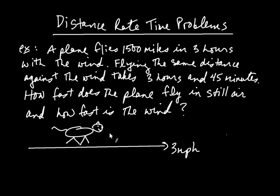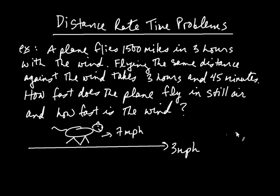The cat is walking this direction at seven miles per hour. Now, you as an observer watching this cat walk on the moving sidewalk, you see a total of the cat walking at ten miles per hour. So the total is ten miles per hour — this is what you see from the side.